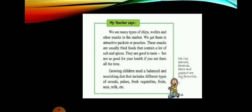Growing children need a balanced and nourishing diet that includes different types of cereals, pulses, fresh vegetables, fruits, nuts, milk, etc. As one child says: 'Dal, rice, peanuts, bananas, beans, and yogurt are my favorites.' Don't just follow the ads and eat crispy crunchy always.